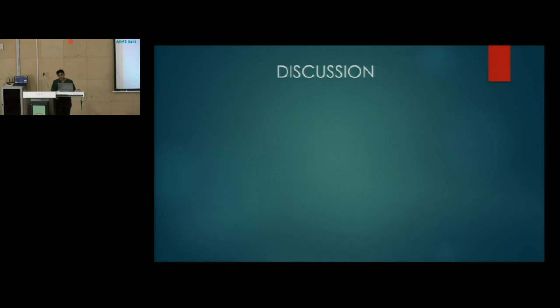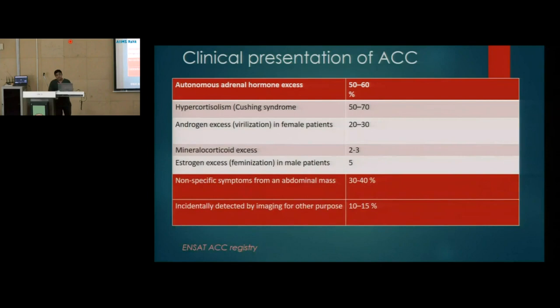Moving on to discussion of adrenocortical carcinoma: regarding clinical presentation, 60% are functional, 30–40% present with non-specific symptoms due to abdominal mass, and 10–15% are incidentally detected by imaging. Among functioning adrenocortical carcinomas, cortisol-secreting ACC is the most common, accounting for approximately three-fourths of all functioning cases.